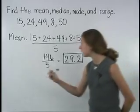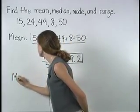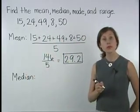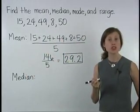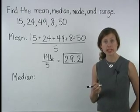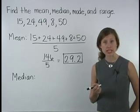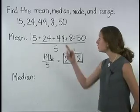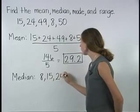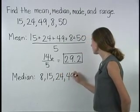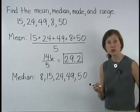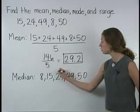Next, let's find the median. Remember that the median is the middle number in the data set when the data set is written from least to greatest. So let's write our data set from least to greatest: 8, 15, 24, 49, and 50. So the median will be the middle number, or 24.